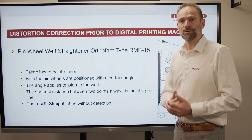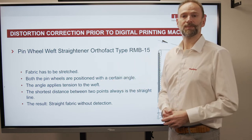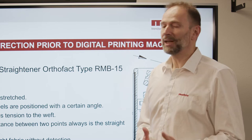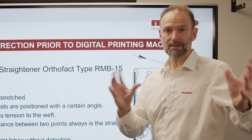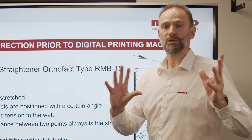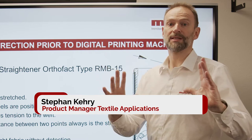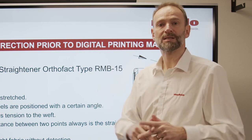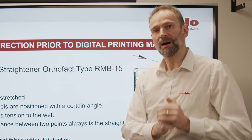Our solution for proper straightening within digital printing is the pinwheel straightener. A pinwheel straightener stretches the fabric. We have two pins — this is where the name comes from. These pins are actually stretching the fabric and they are freely operable to each other. That means they are looking for the shortest distance to each other automatically because of the stretch. The shortest distance between two lines is always a straight line. This is what we need — straight fabric — and this is what those pins are doing very successfully, even without any detection. This can be used for nearly every fabric which is not stretchable or elastic.